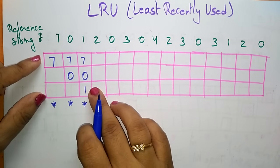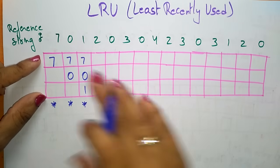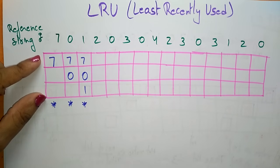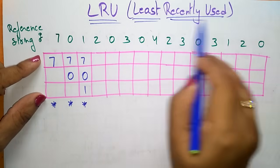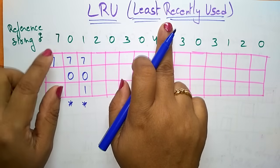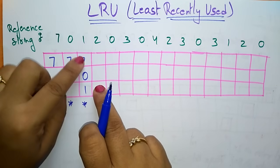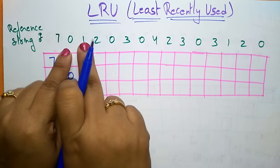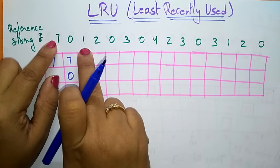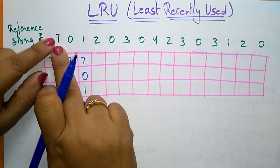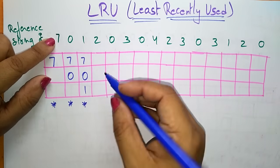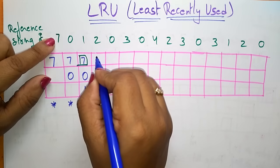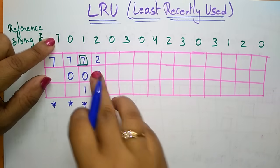We have to bring page 2 from the disk and place it in the main memory, but the memory frames are already full. So we have to replace a page — this is the page replacement technique. Using the Least Recently Used algorithm: I need to place 2, so I check which page is least recently used. Among 7, 0, 1 — 1 is most recently used, then 0, then 7. So 7 is the least recently used. I replace 7 with 2, giving frames: 2, 0, 1. This is also a page fault.